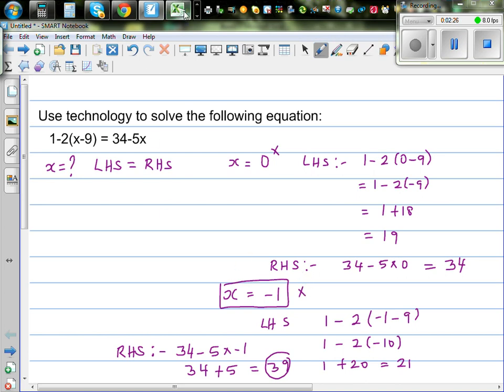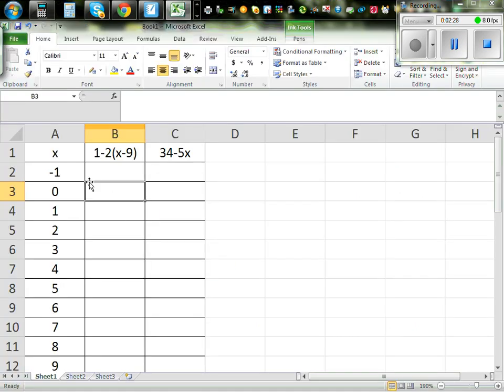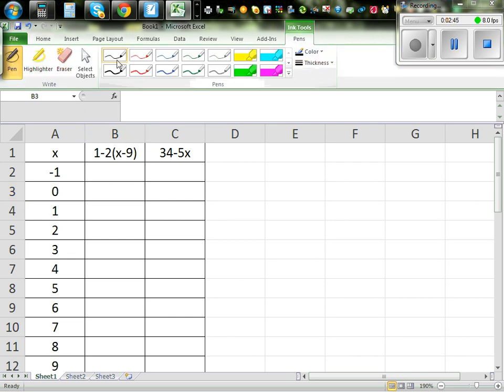And so now we're going to use Excel to get to this answer. So let's start with negative 1. So I have in column A, I have taken numbers, the different values of x's. This is your left hand side.